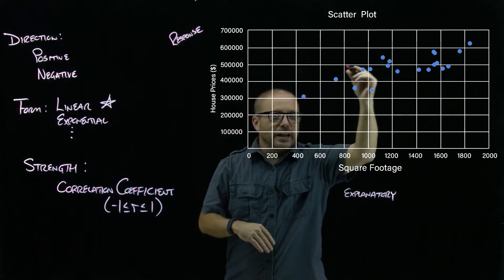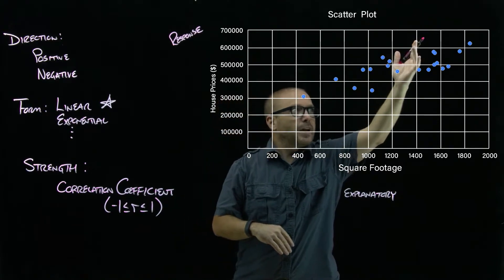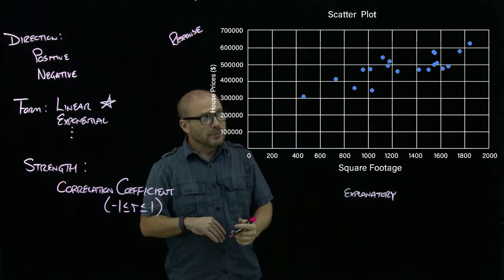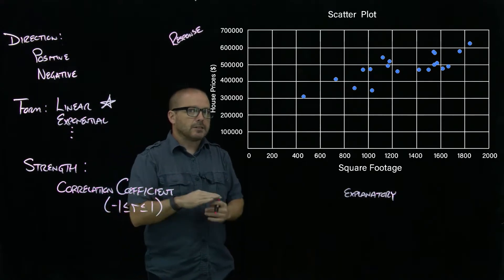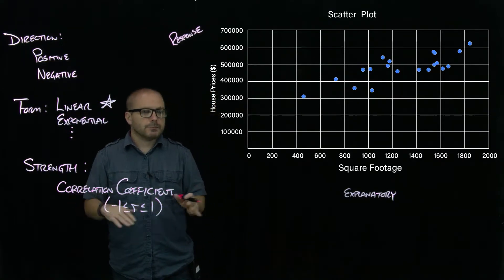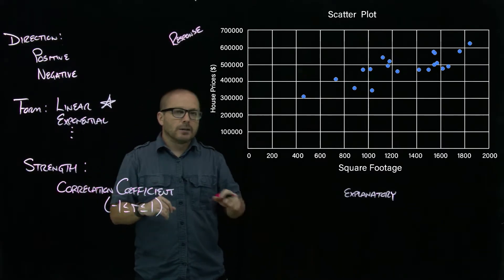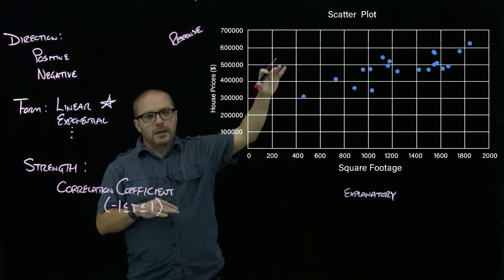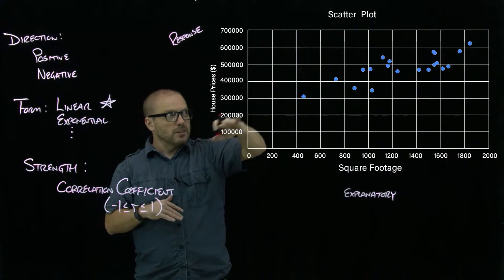If it was perfect—if these dots were just perfectly on a line so that when I drew a line it passed through every dot—it would have an R of one. The one is telling it's a perfect relationship, doesn't deviate from linear at all, and the fact that it's a positive one tells us that it's a positive relationship—the slope is positive.